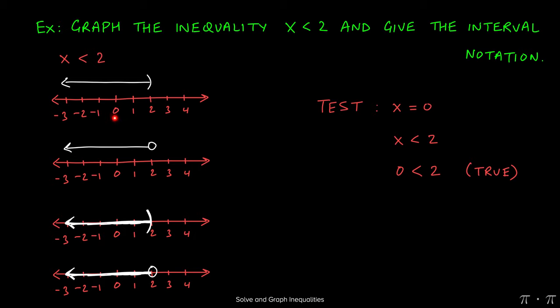When we plug in a number as a test point into our inequality and we get a true statement, that means the arrow has to go in that number's direction. So this arrow is going towards 0.